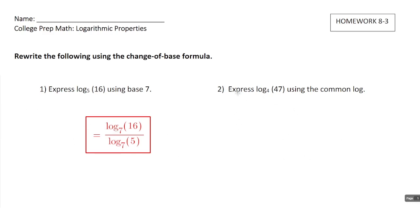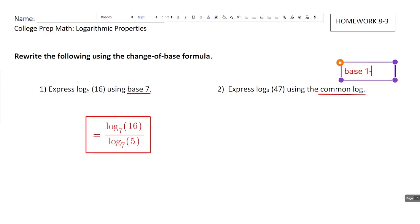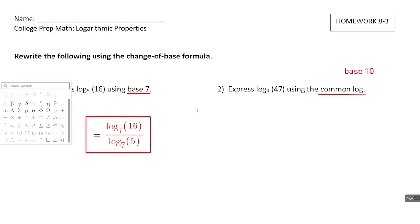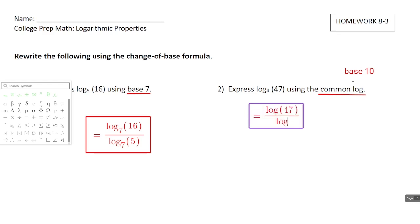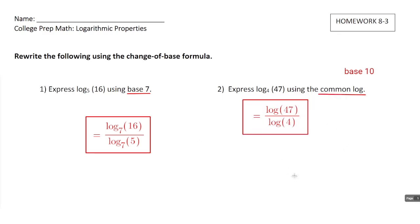For number 2 we'll do basically the same thing. The only real difference is that it's asking us to use the common log. It's not explicitly telling us the base like number 1 did — you have to know that the common log is base 10. This is where we write a logarithm with no base explicitly stated, so you just write log. So this would be log of 47 divided by log of 4, and this is assumed to be base 10.